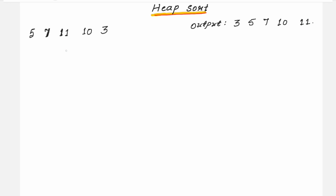The very first step is to form a binary tree. Take the first element 5 as the root node, then place the next element 7 to the left, then 11, then 10, and 3. Simply place all the elements one by one in the form of a binary tree.